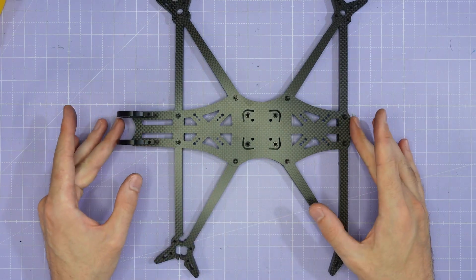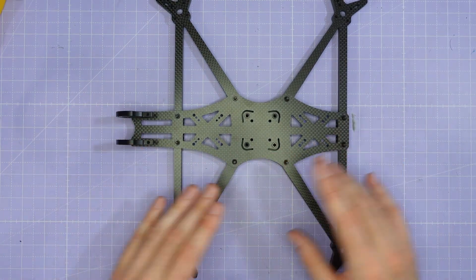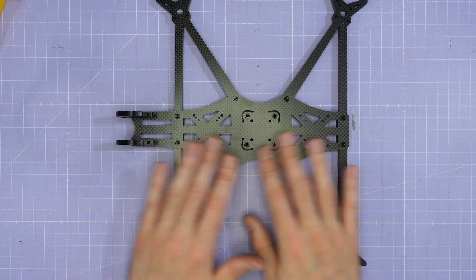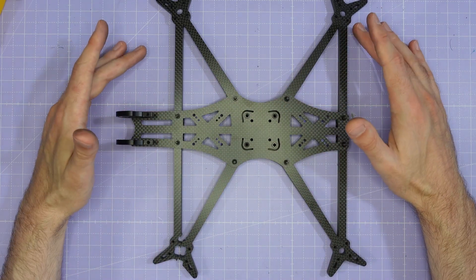Once the camera cage and the arms are all installed this is the perfect time to build out all the electronics, your stack, your VTX camera, all of that stuff. You can build it all with the frame in this configuration.